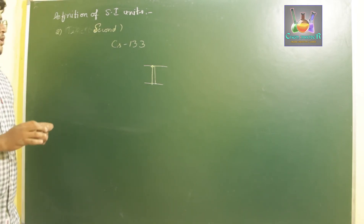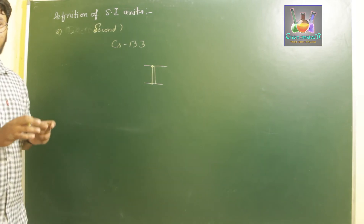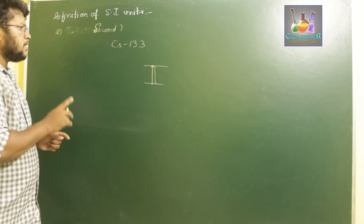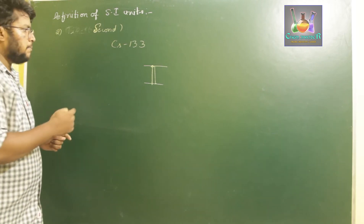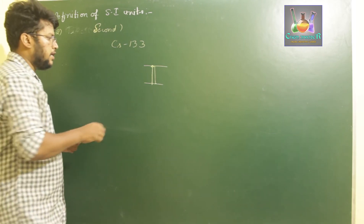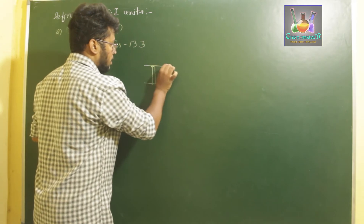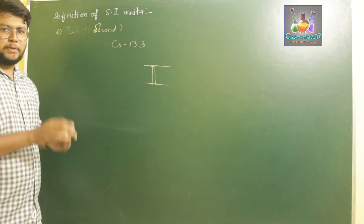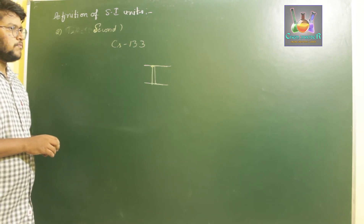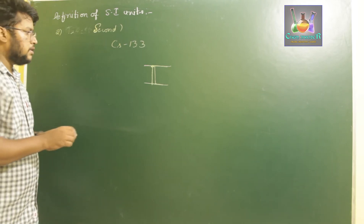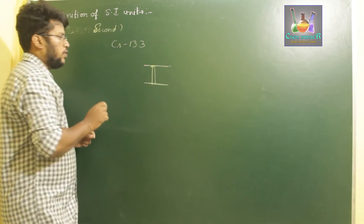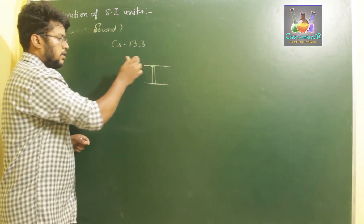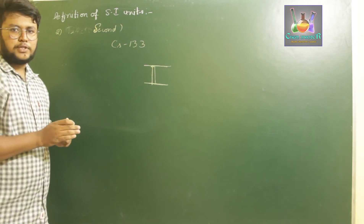A second is defined as the number of periods taken by the radiation between the two fine lines present in the ground state of cesium-133 for a complete transition. If the radiation in the ground state of cesium-133 makes a transition between its two fine lines in a given period, that period of time is called a second.